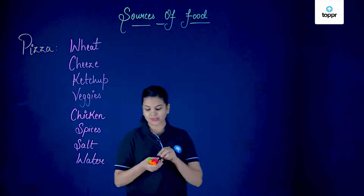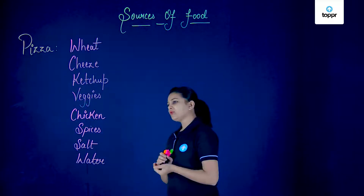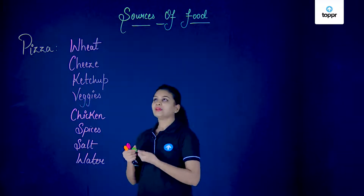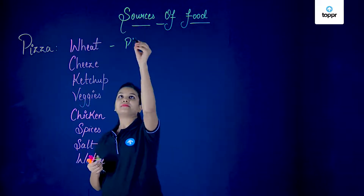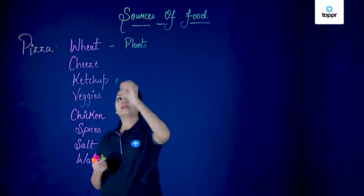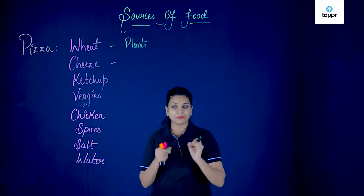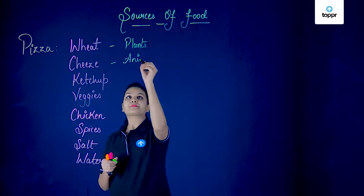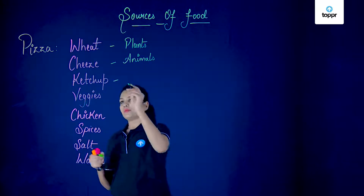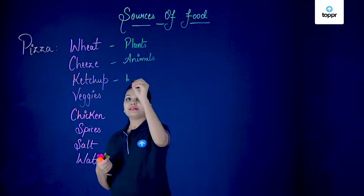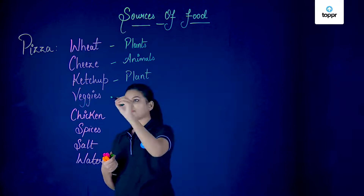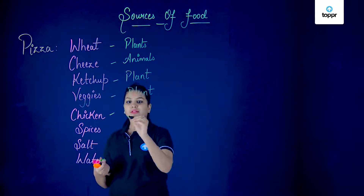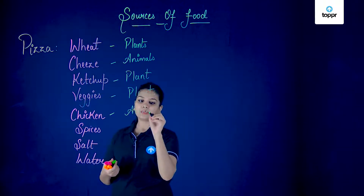There can be more or fewer ingredients depending on what you like, but these are the main ones. When we talk about wheat, we get it from plants. Cheese is made with the help of milk, and milk is an animal product — so cheese is obtained from animals. Ketchup's main ingredient is tomato, which is again a plant product. Veggies of course come from plants. Chicken we get from animals.